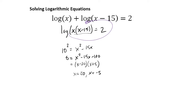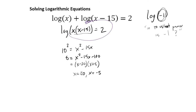Here's the problem though: can you have a negative argument of a logarithm? For example, log of negative 1 — this would be saying 10 to what power gives me negative 1? There isn't any such power; you cannot raise a positive number to any power to get a negative number. So there's no way you'd ever have a negative argument to a logarithm. When we get our two answers, 20 is fine, but negative 5 won't work because log of negative 5 has no answer. So negative 5 is an extraneous solution, and the only answer is x equals 20.